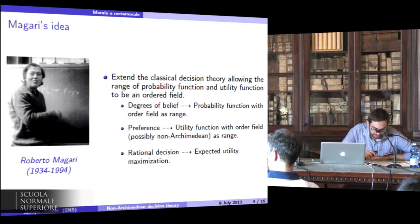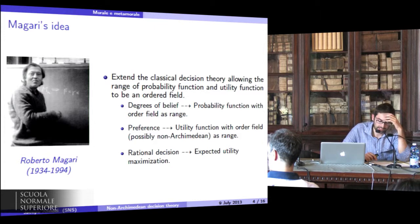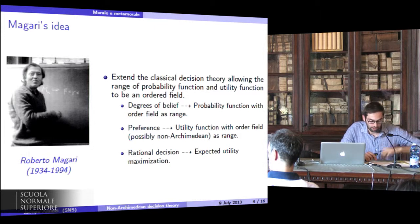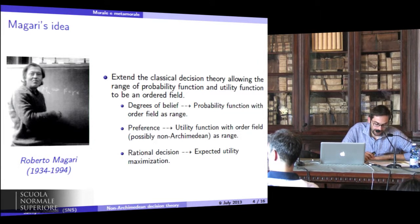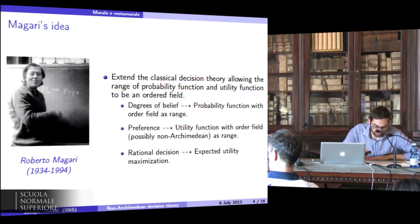So in Magari's decision theory, degrees of belief are represented by probability functions with ordered field as range, preferences by utility functions with non-Archimedean field as range, and the decision rule is expected utility maximization.